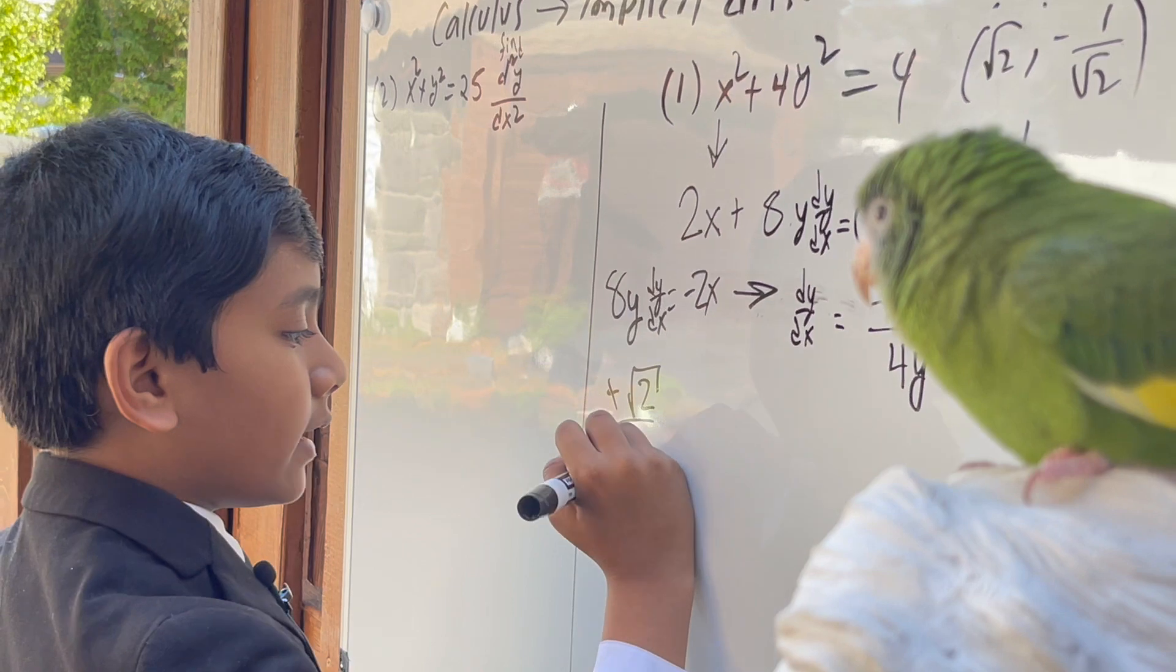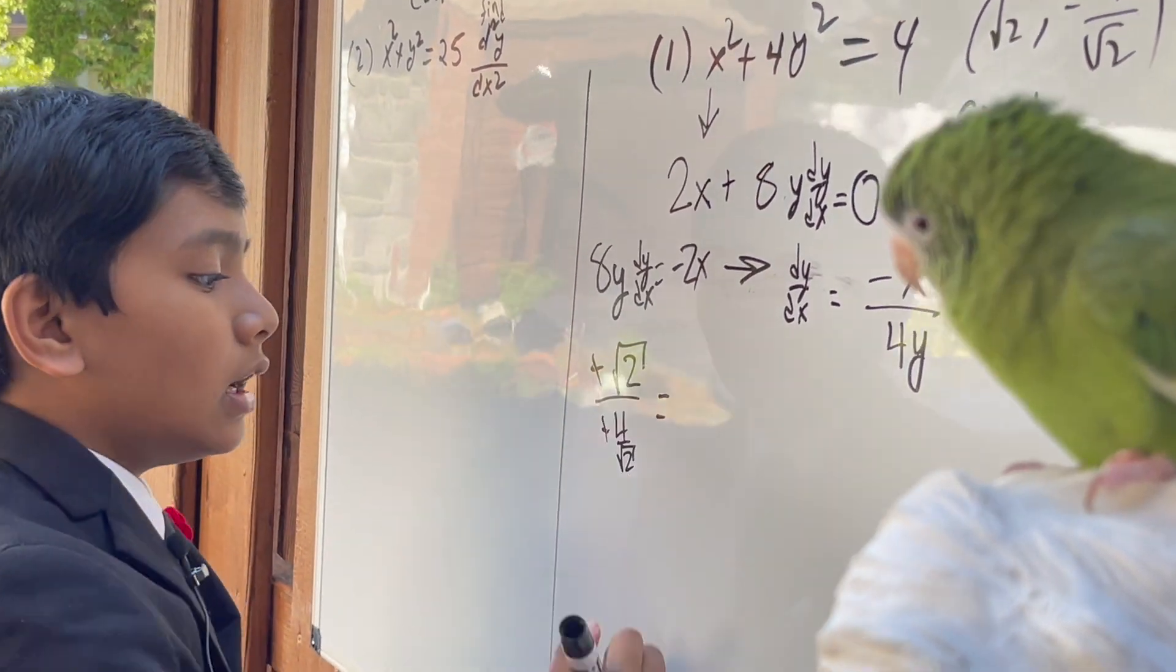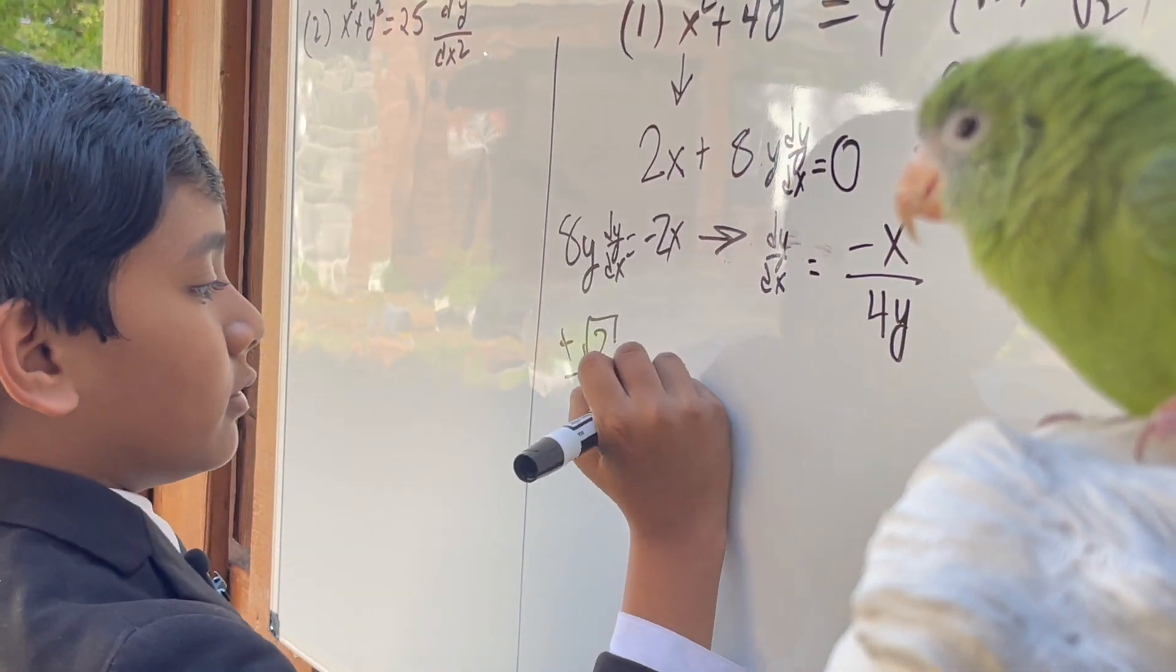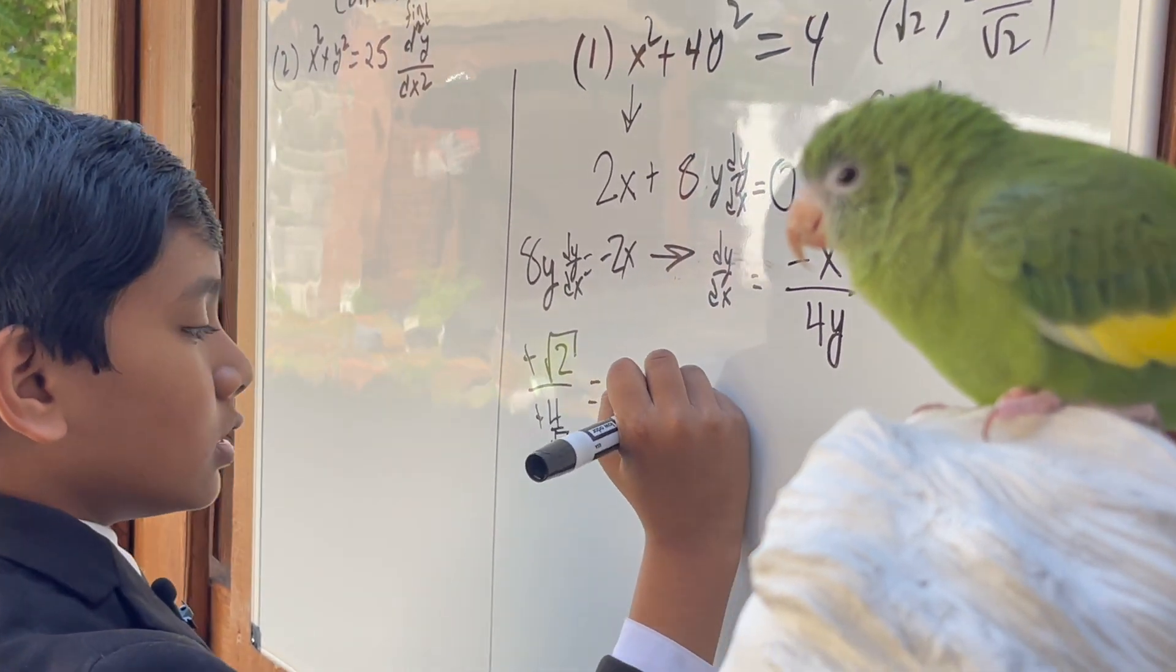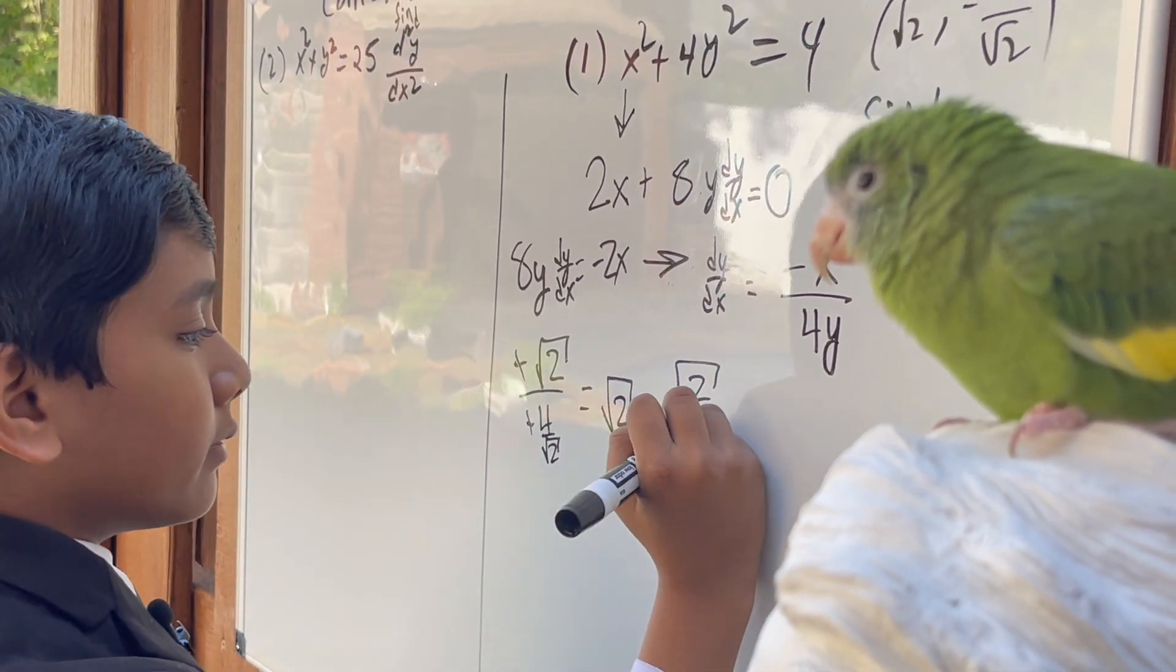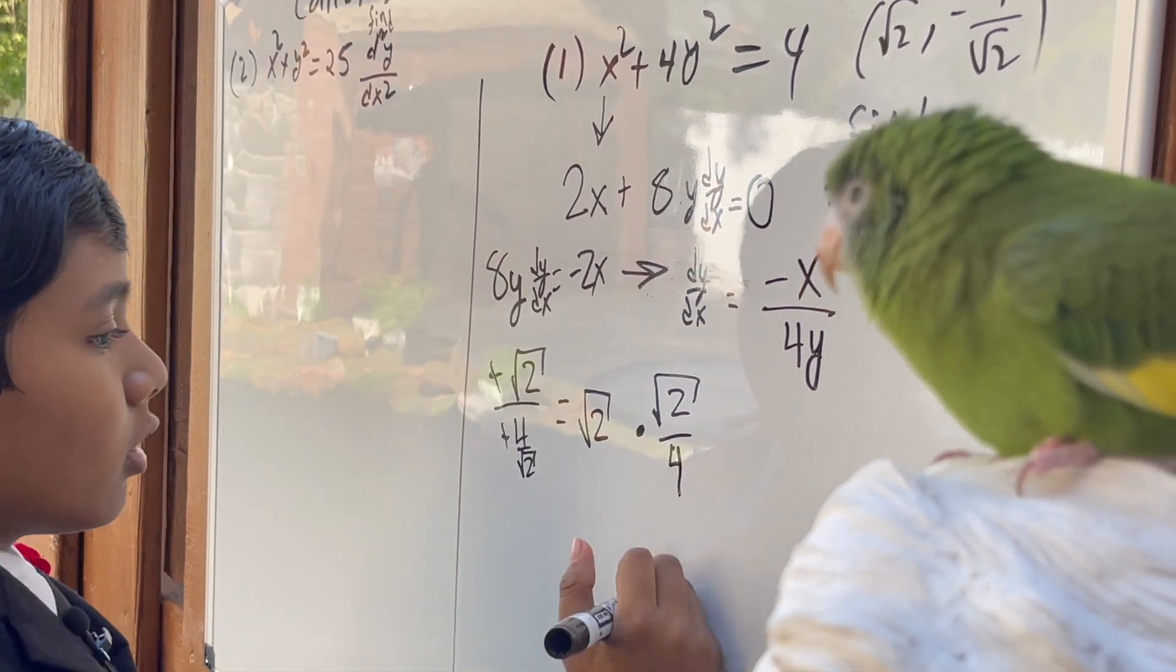Obviously, we can cancel out the negatives, but then this is equal to √2 over this fraction inverse. So, this is √2 plus √2 over 4.